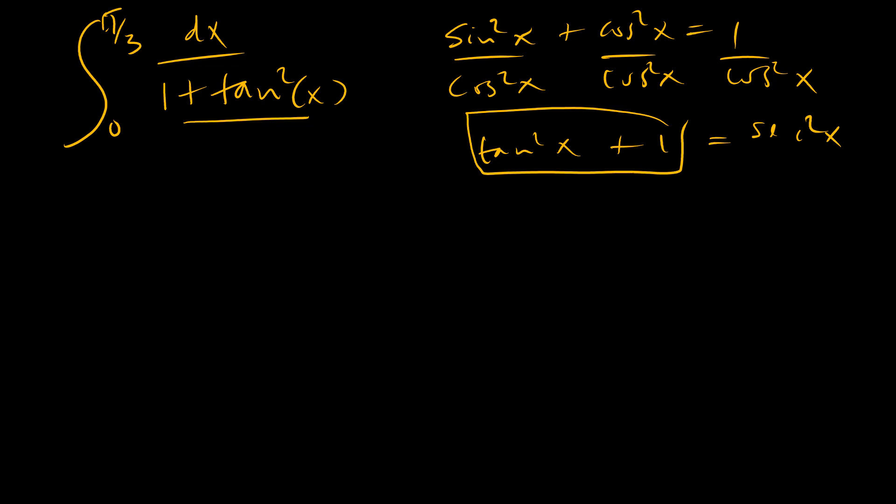And so our problem essentially is the integral from x equals 0 to x equals pi over 3 of 1 over sec squared x, which means this is the same as 0 to pi over 3 of cosine squared x.